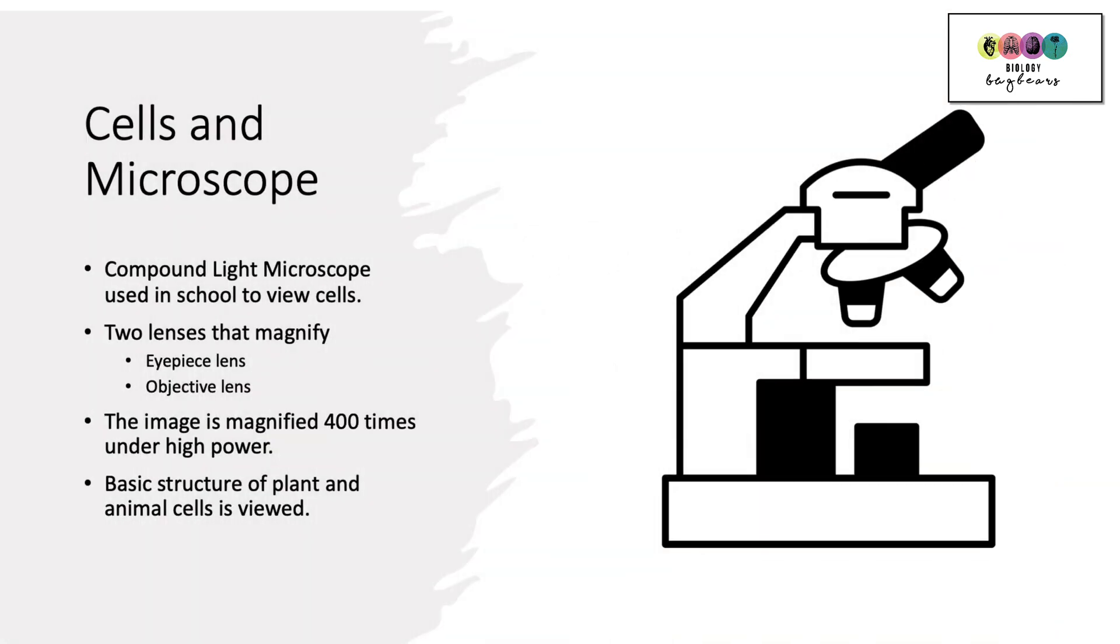Cells are tiny. You cannot see them with the naked eye. So the microscope is a key tool that's very important for viewing cells. It's essential. So the microscope that we use in school is known as the compound light microscope and it consists of two lenses. There's a lens in the eyepiece and then there's an objective lens. Using this type of microscope, the image is magnified maximum 400 times. So that's using the high power lens. So we only get to see the basic structure of plant and animal cells.